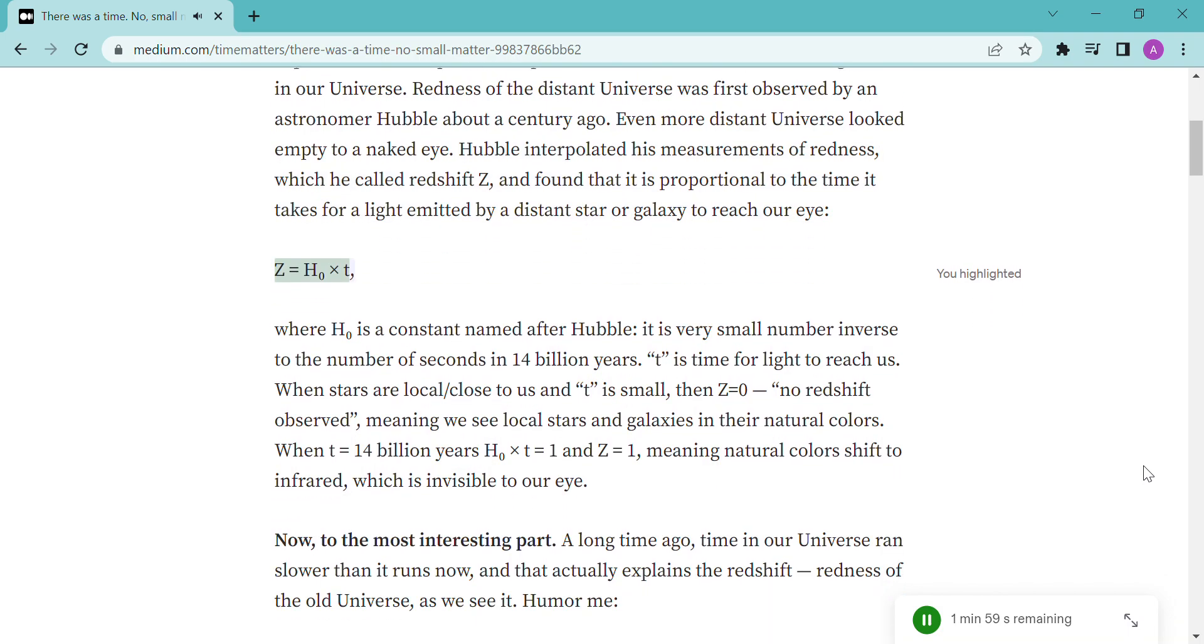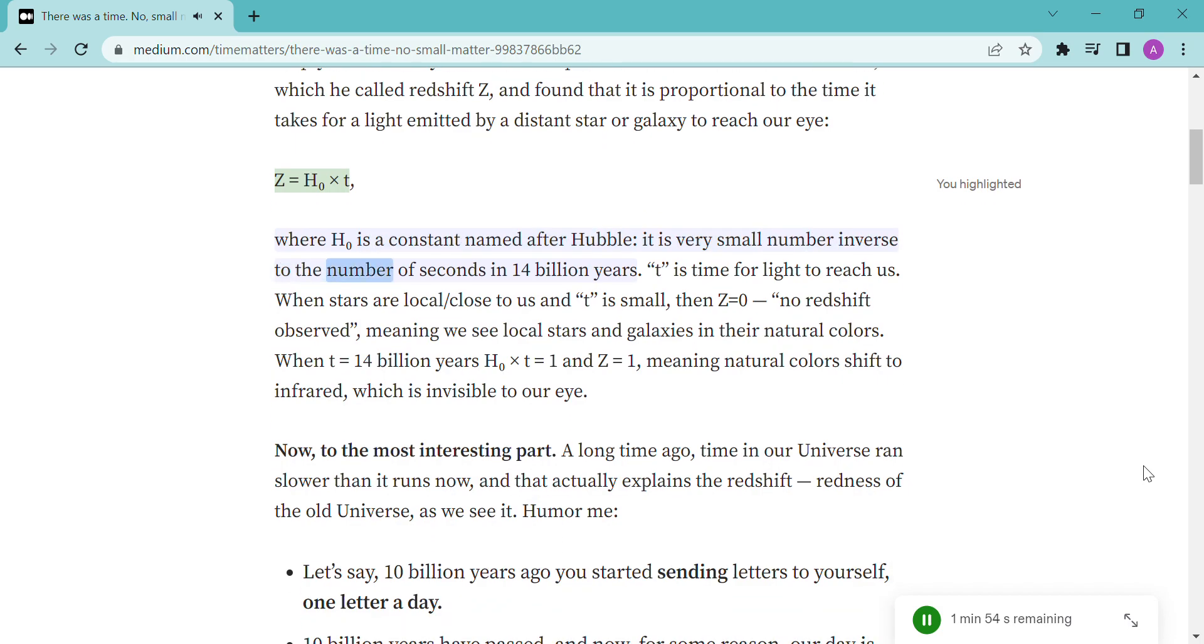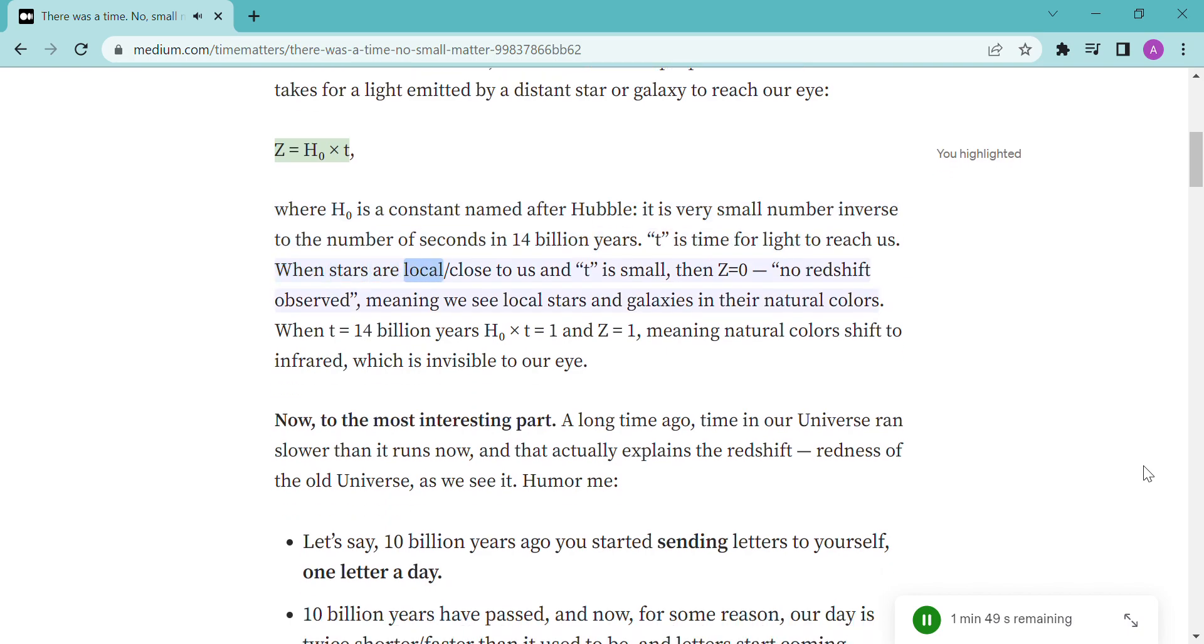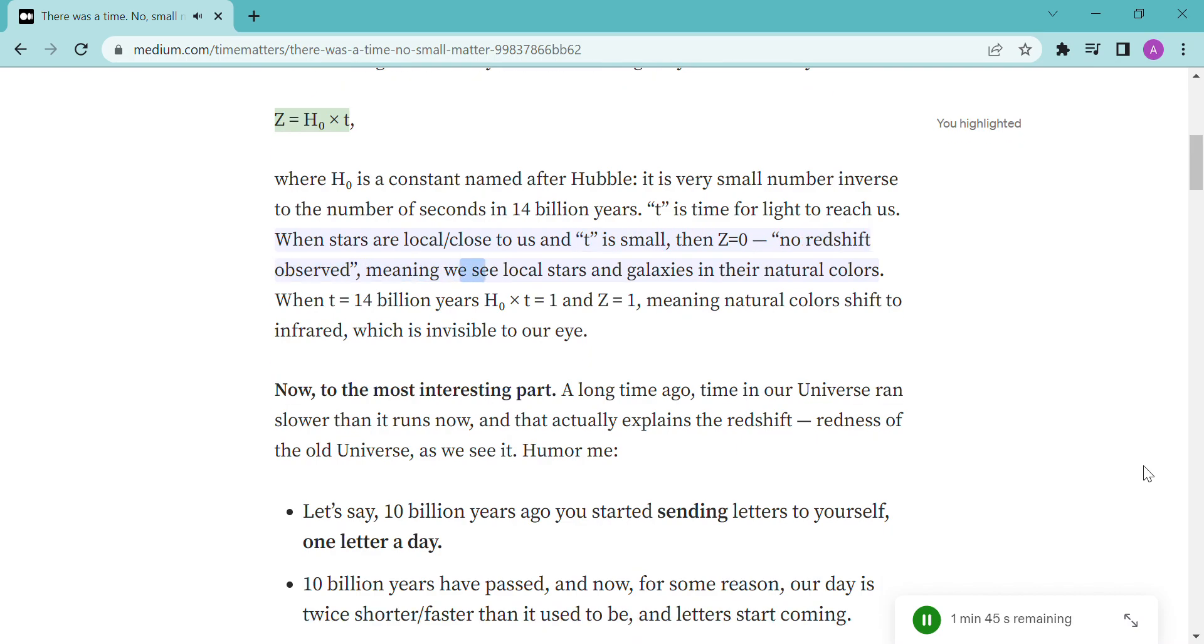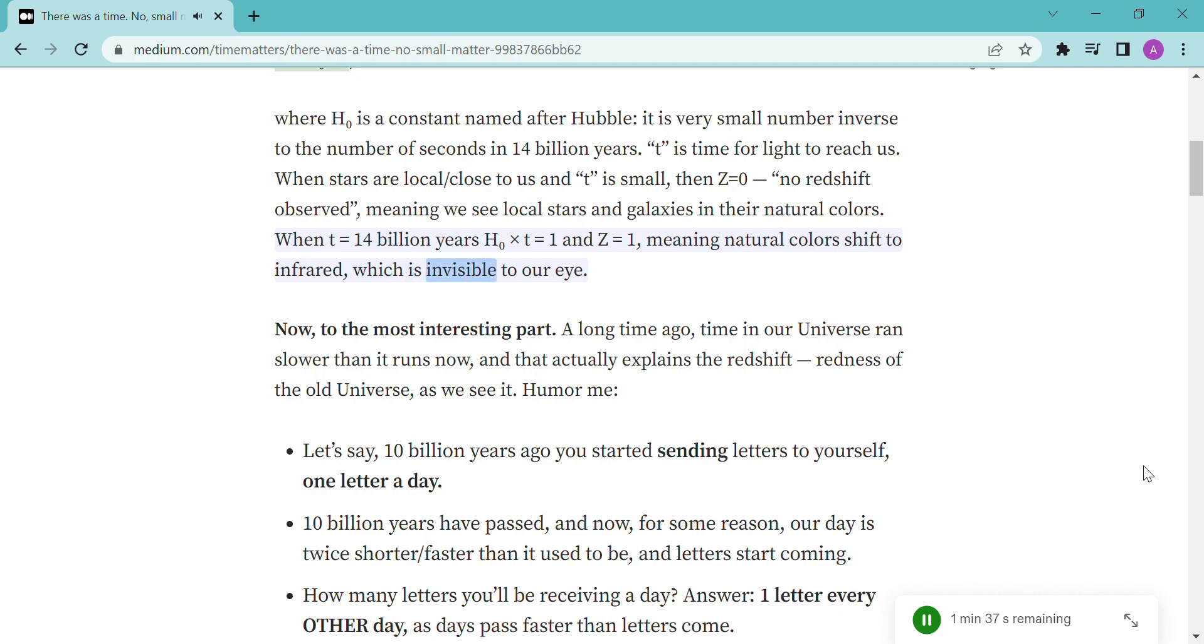Z equals H0 times T, where H0 is a constant named after Hubble. It is a very small number, inverse to the number of seconds in 14 billion years. T is time for light to reach us. When stars are local, close to us and T is small, then Z equals zero, no redshift observed, meaning we see local stars and galaxies in their natural colors. When T equals 14 billion years, H0 times T equals 1 and Z equals 1, meaning natural colors shift to infrared, which is invisible to our eye.